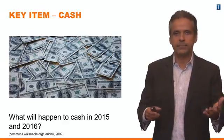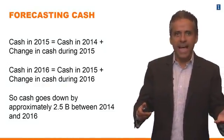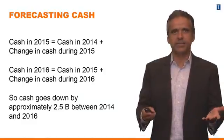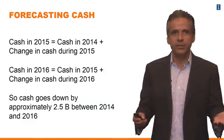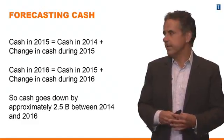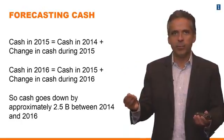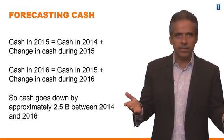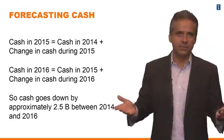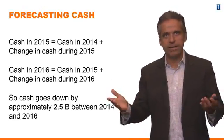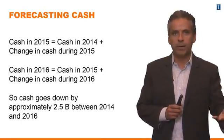That's the key item that we're going to think about. So how do we forecast cash? It actually is fairly easy — it's not an assumption, this really is an accounting definition. PepsiCo's cash in 2015 should be exactly equal to the cash in 2014 that you ended up the year with, plus whatever happens in 2015. So if you generated $190 million of cash, as in our example, your cash is going to go up a bit.